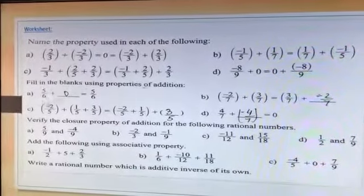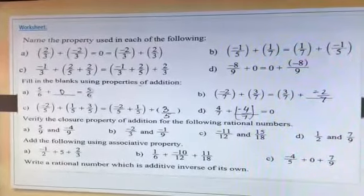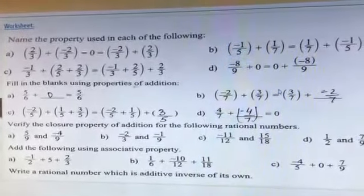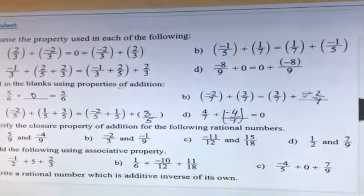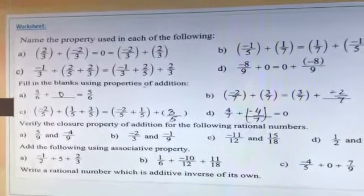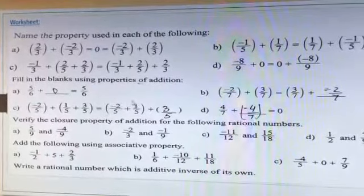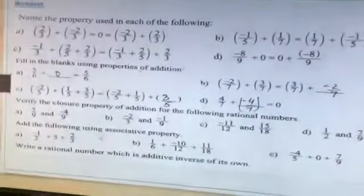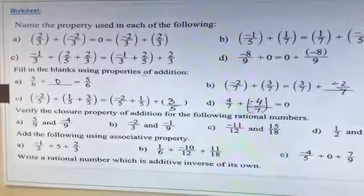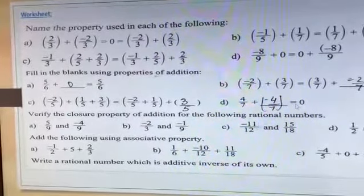Next, fill in the blanks. You have to complete: 5 by 6 plus blank equals 5 by 6. What do we add? The answer stays 5 by 6, so we add 0. Second blank: minus 2 by 7 is what is left, so we fill in minus 2 by 7. Then three numbers are given — what is not given? 3 by 5 is missing, so write 3 by 5. Then for 4 by 7: what do we write to make it 0? Using inverse property, write minus 4 by 7.